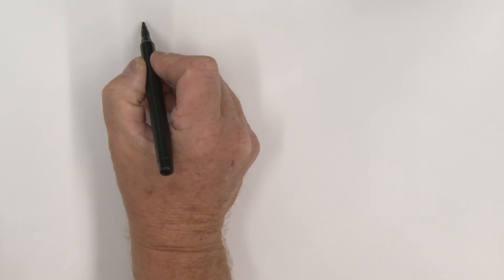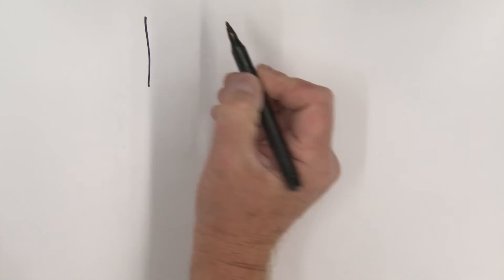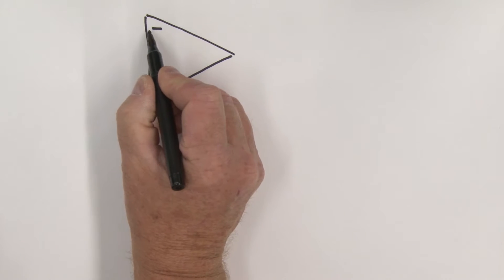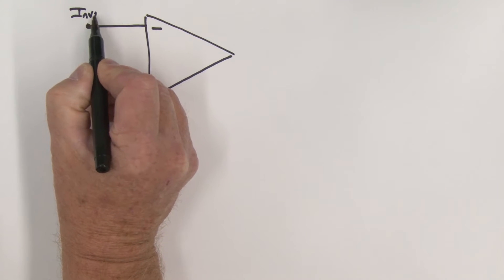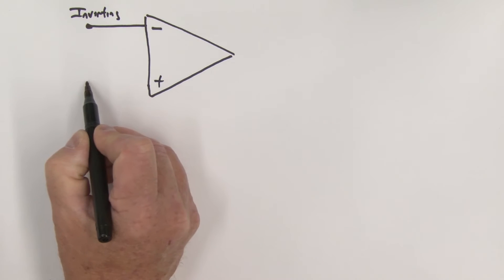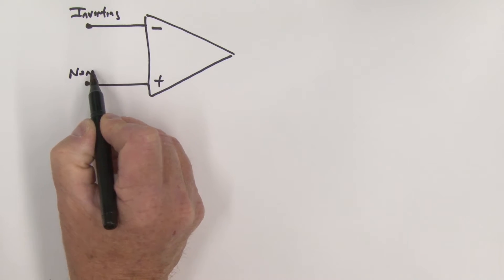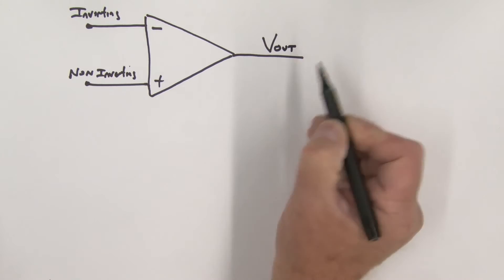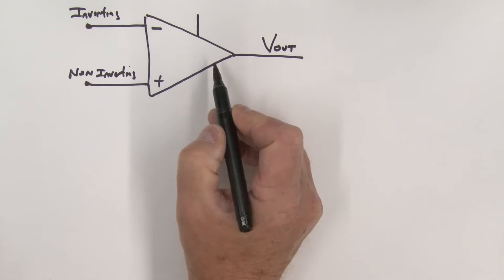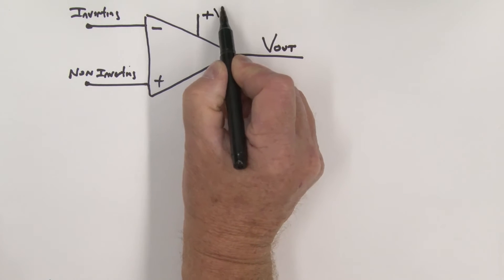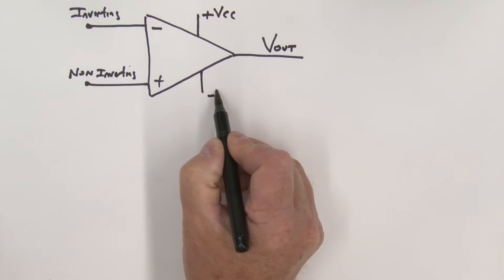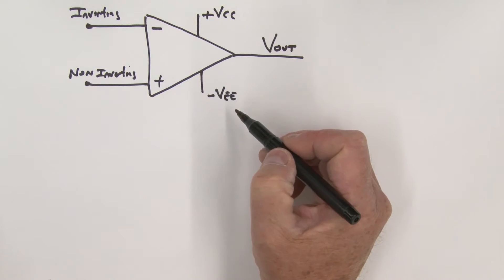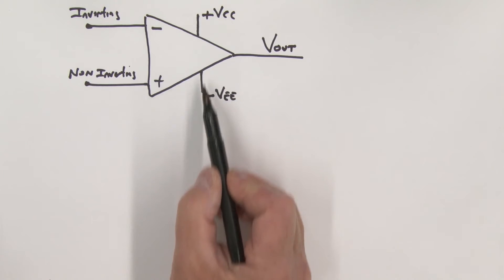Let's look at the symbol for the operational amplifier. We use a triangular shape. There are two input terminals: an inverting input and a non-inverting input, plus an output we'll call V_out. The op-amp has two power supplies — a plus VCC and a minus VEE — which typically have values of plus and minus 15 volts. Normally when analyzing op-amp circuits we don't actually show the power supply connections.